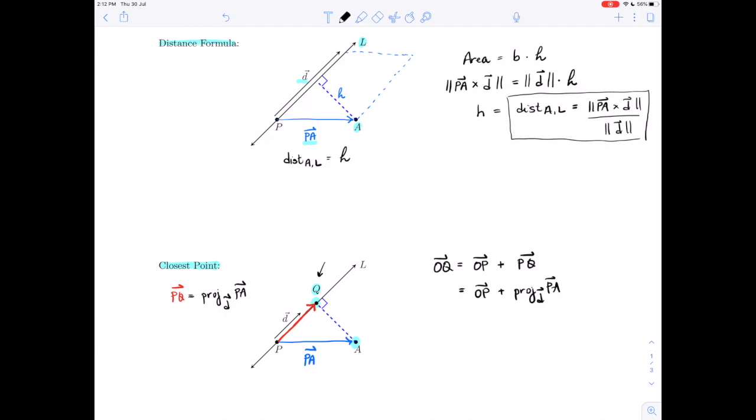So there is our procedure. We find the projection vector, and we add it to the position vector of the point that we can see on the line.